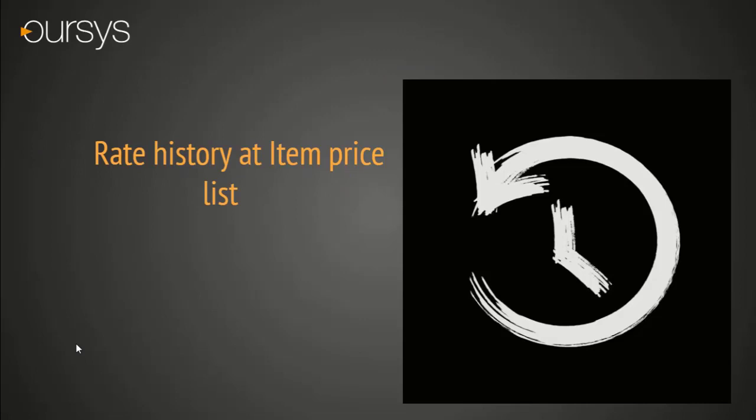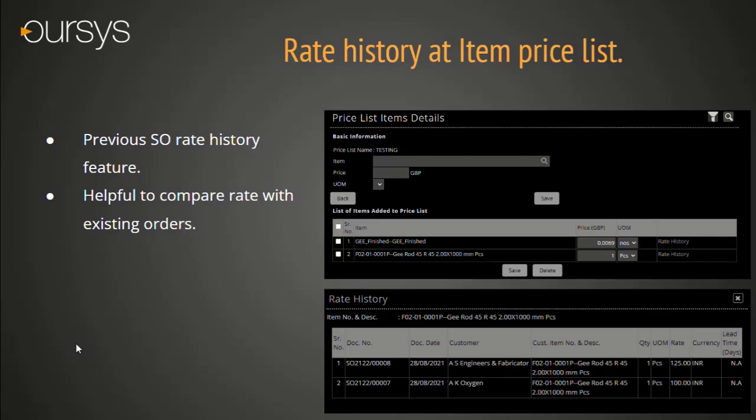Rate History at Item Price Level. This feature has been added in the master level. Rate history at the price list level — it will help us to view all previous Sales Order rate history in a single click. System will show all past rate history records belonging to the items.